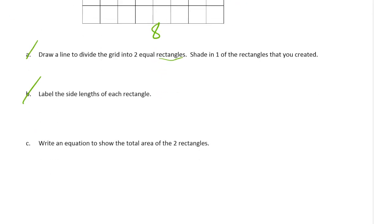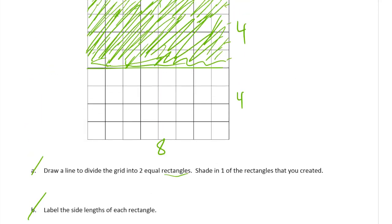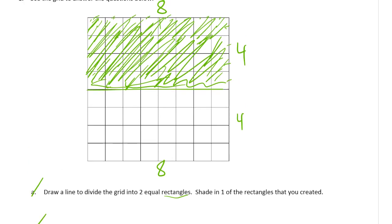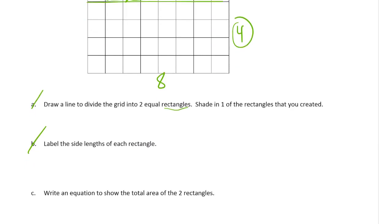Write an equation to show the total area of the two rectangles. So we could just add these two fours together, could do that and call it the whole thing, one, just multiply eight times eight. Or we could do this.